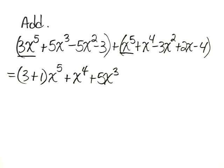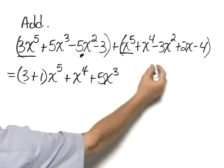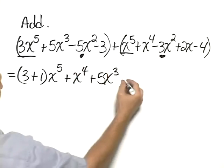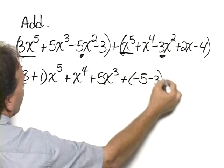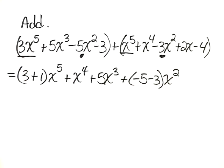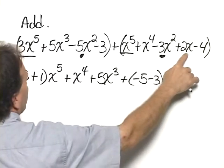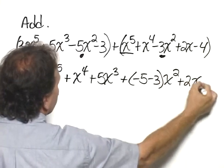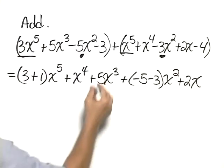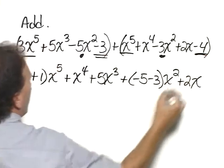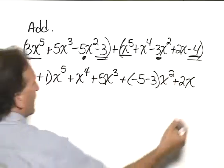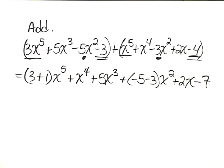Now, we look for x squareds, of which there are 2 of them, here and here, so we have plus, in parentheses, negative 5 minus 3 times x squared. We have just this x term is the only x term, so plus 2x, and then finally, negative 3 minus 4, and negative 3 minus 4 is negative 7.